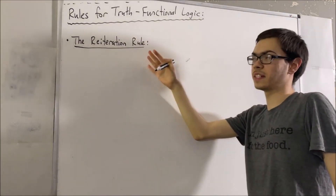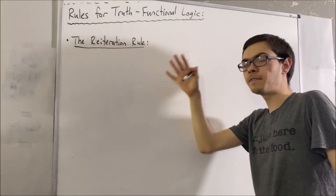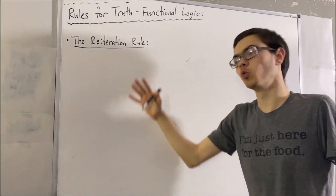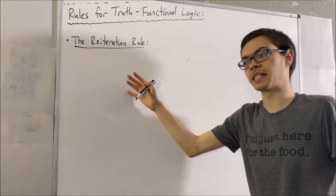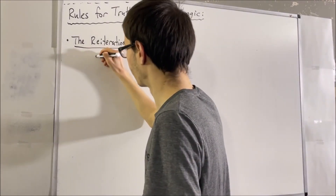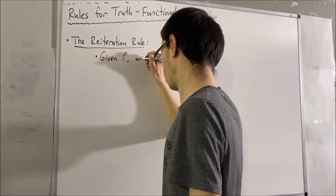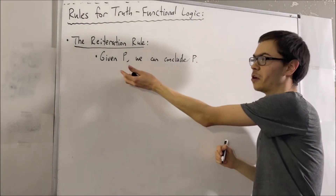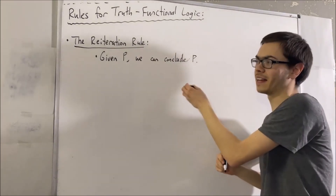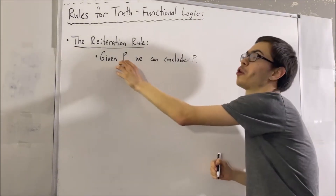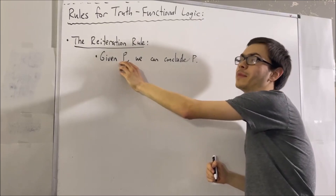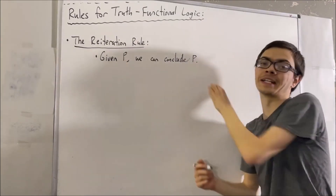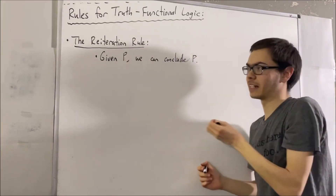The reiteration rule says that given a statement P is true, we can conclude that P is true. All we're saying here is that if we already know that a statement is true, we're allowed to say it's true again. And that's the idea.